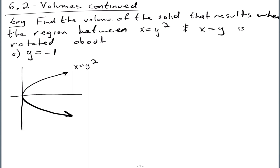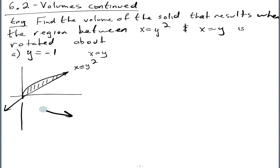And then x equals y looks like that. So this is x equals y. What's the region that I'm looking at? It's this part right here. So I'm going to erase the part that I'm not going to use so it doesn't clutter everything up, and just keep the region.